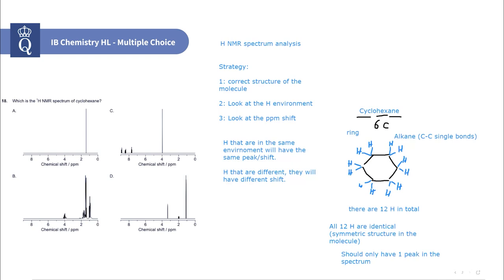Now let's look at the options and see if we can eliminate some right away. When we look at options B and D, there are multiple peaks in various places. This indicates that those hydrogens are in different environments and are not all identical. Therefore, we can eliminate those options right off the bat.